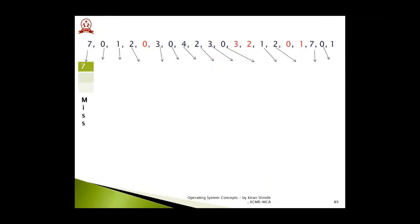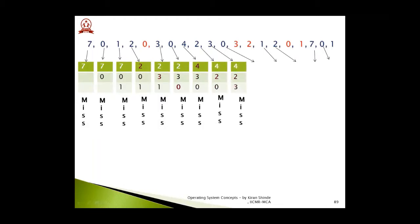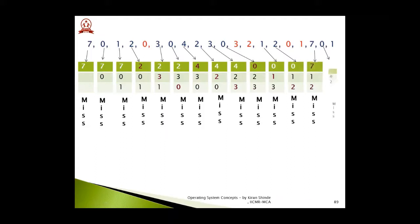A step-by-step animation is provided to further illustrate this. After 7, page 0 is brought into memory; after 0, page 1. These are the first three page loads. For page 2, the top element is 7, so 7 is replaced by 2. No replacement needed for 0. Then 0 is replaced by 3, and 1 is replaced by 0. Following the FIFO sequence through the full reference string, the number of page faults is 15.